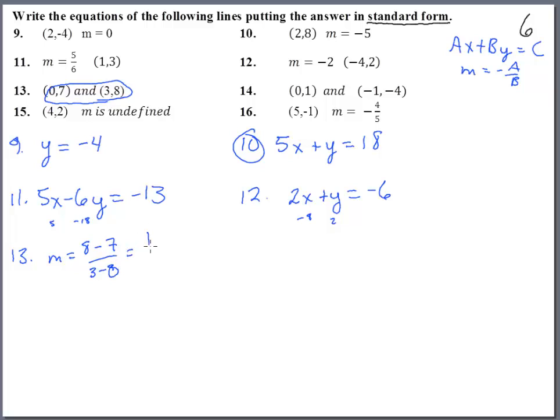That means it will be x minus 3y equals, and then stick in one of these: zero minus twenty-one is negative twenty-one. You can double-check to make sure this other point will go in there as well. Three minus twenty-four will also give you negative twenty-one.